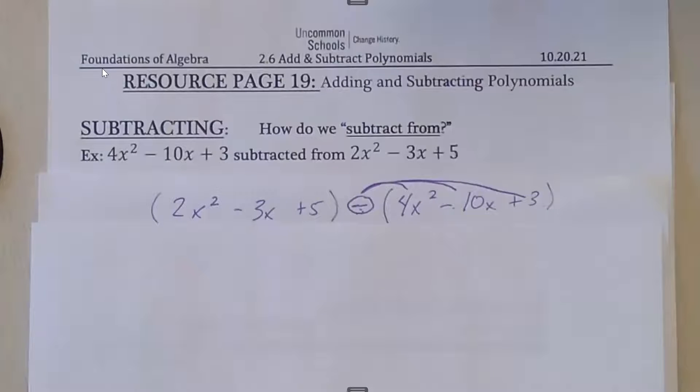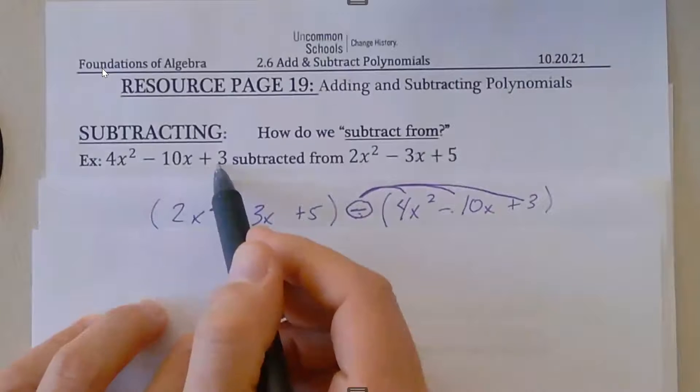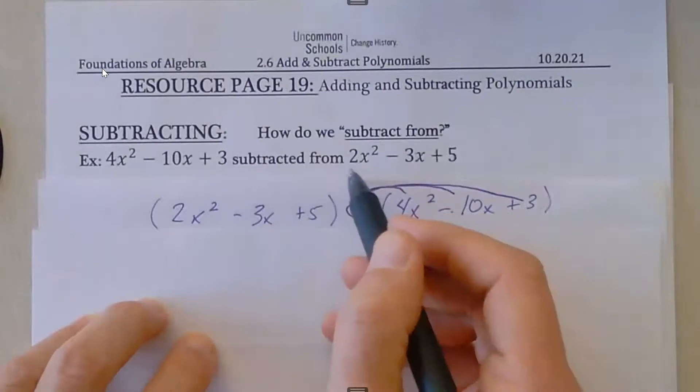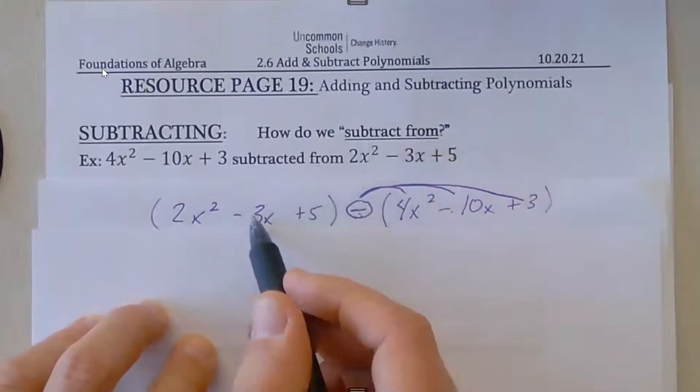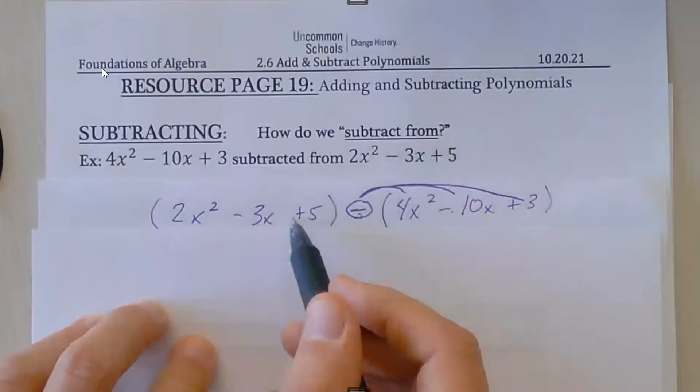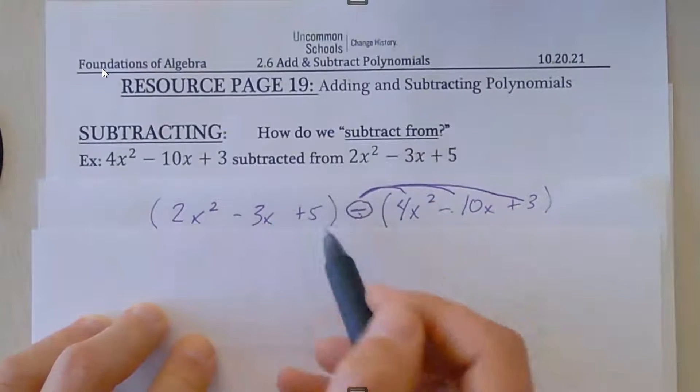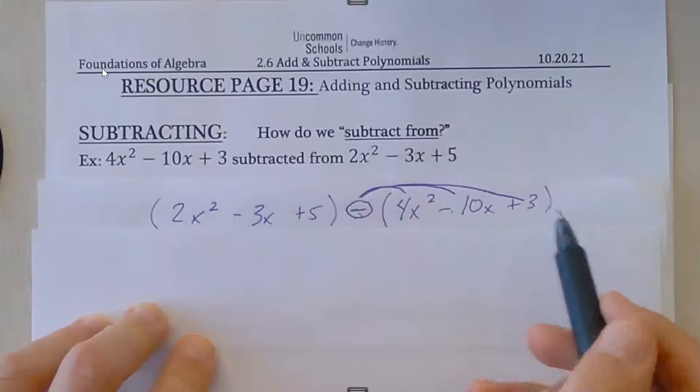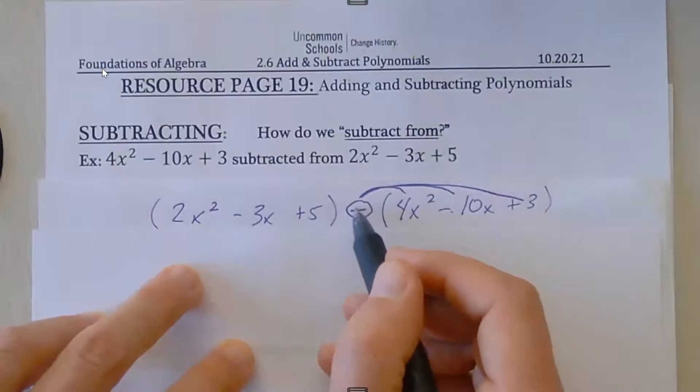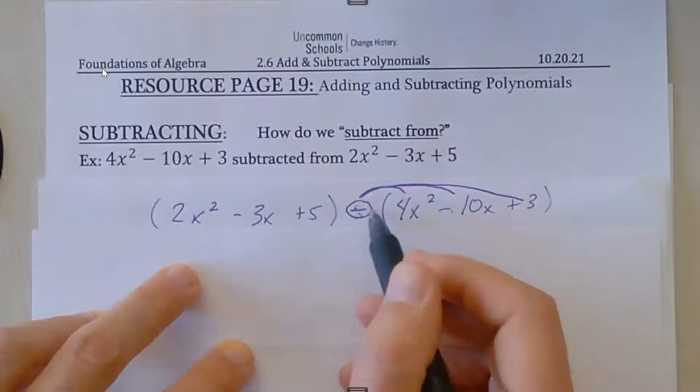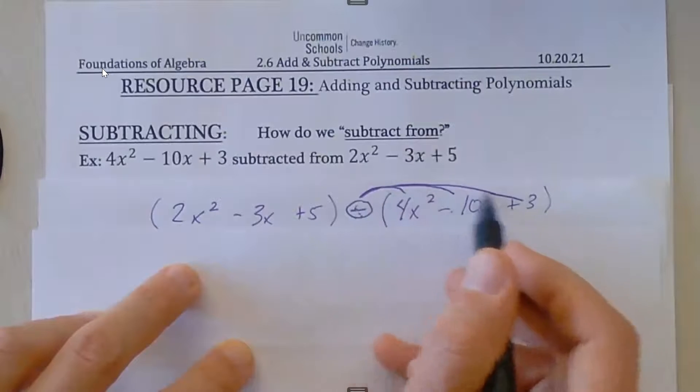Before we move on, I want to remind you that we had an expression subtracted from another expression. This expression we're subtracting from should come first in the subtraction. Put your expressions in parentheses. Then remember that with parentheses we need to distribute this sign to everything in the parentheses to the right of it.